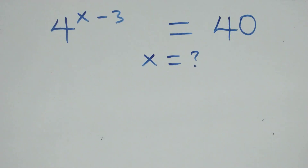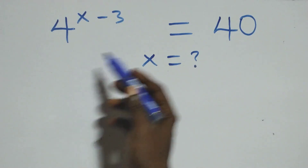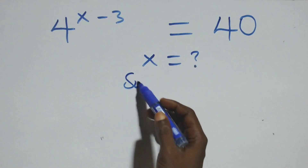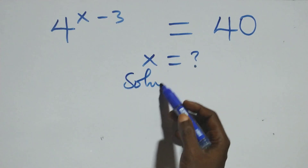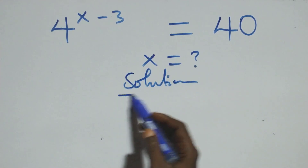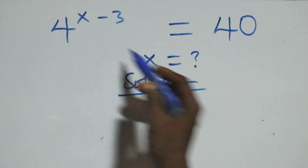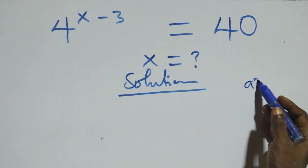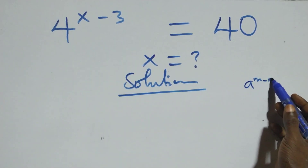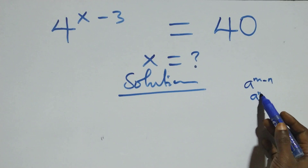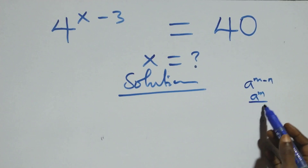Hello, welcome. Here we have a nice exponential equation to solve. This follows when we have a raised to power n minus n, which is the same thing as a raised to power n over a raised to power n.